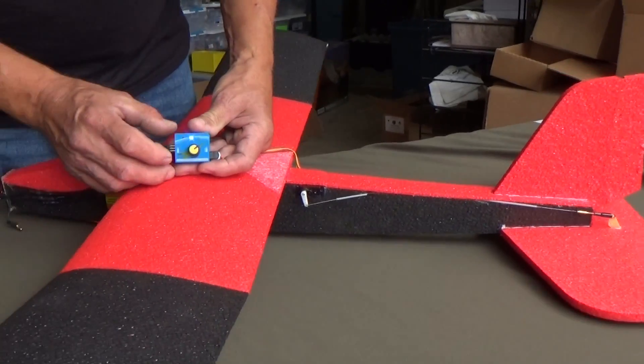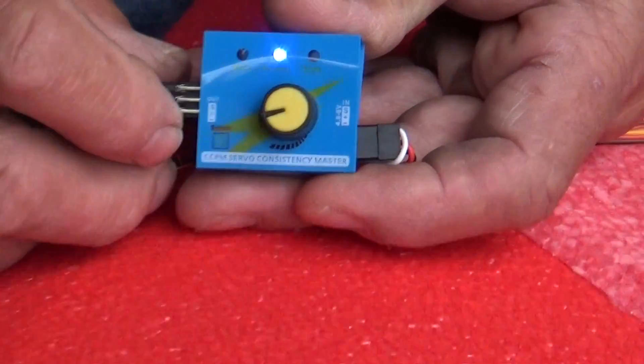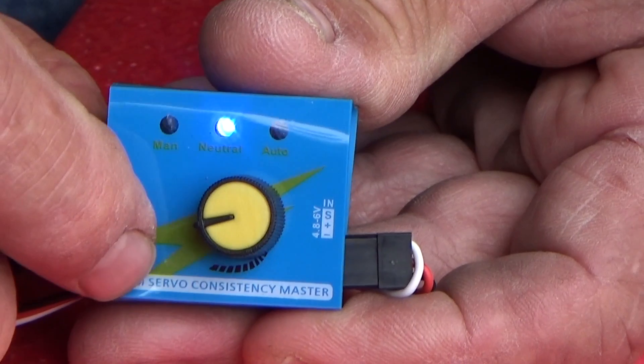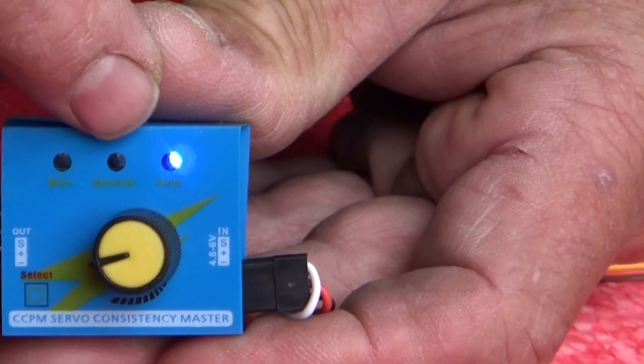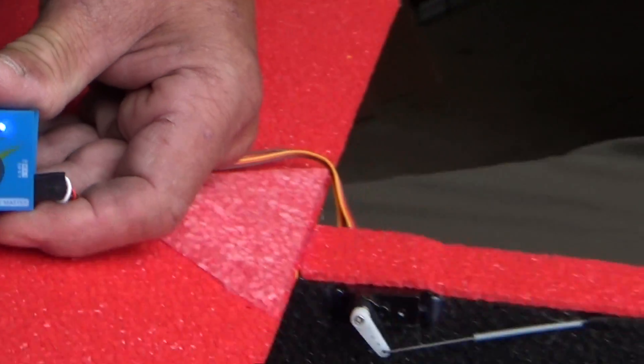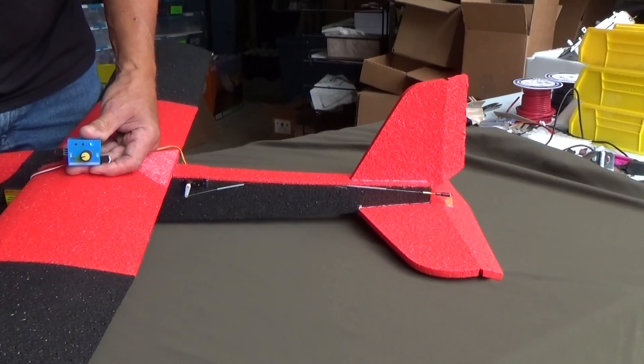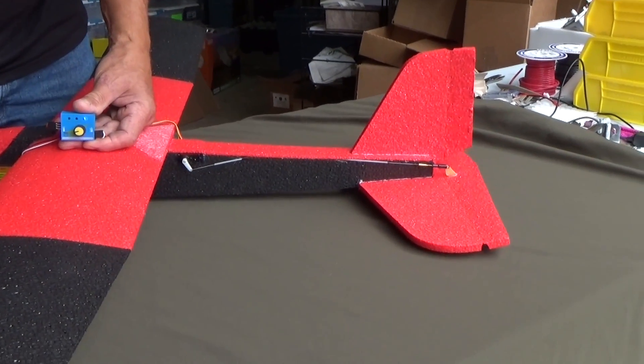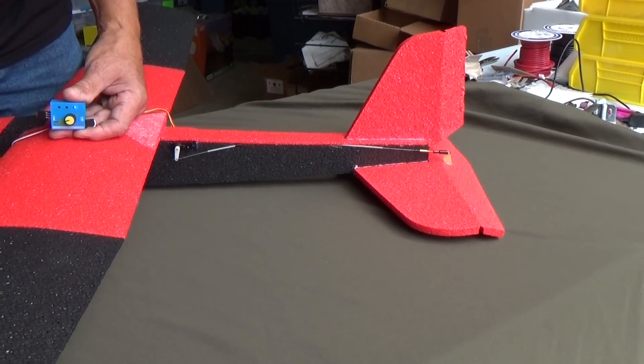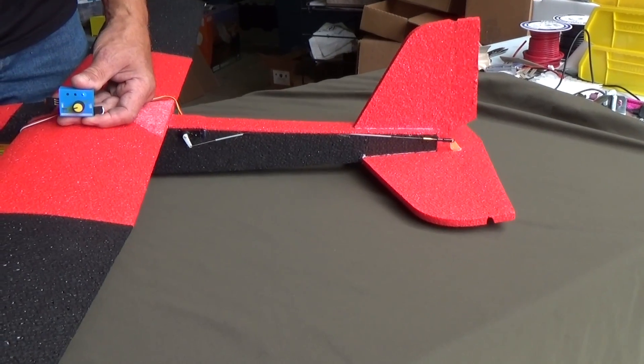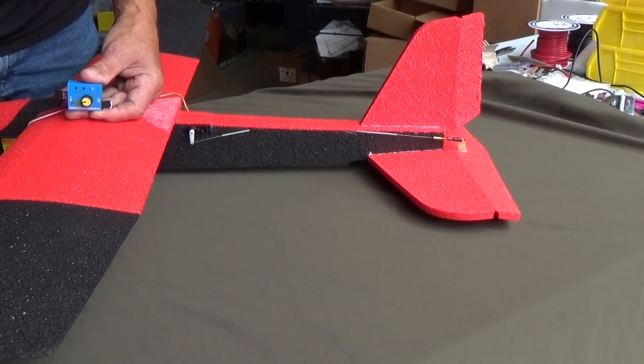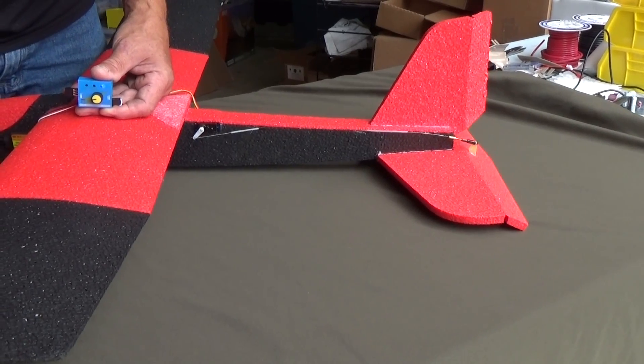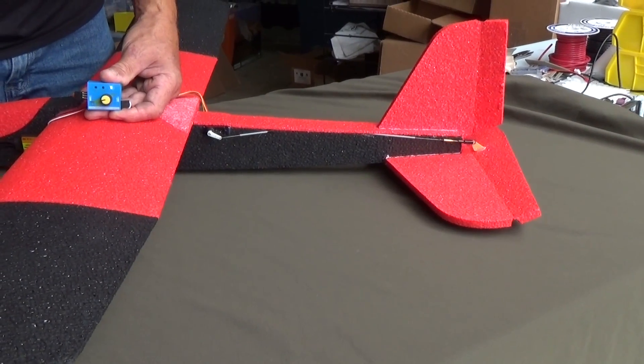The other mode is automatic mode. With automatic mode, we'll press the select button. Now we're in auto mode. If you notice, we're turning our control surfaces from one end limit to the other. So it's showing you the full motion that you're going to have in flight being controlled by your transmitter.